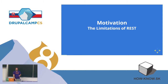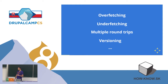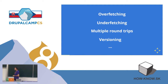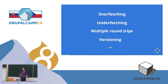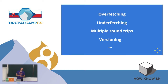REST has some fundamental flaws when it comes to solving these problems. We have the problem of overfetching, underfetching, the problem of additional round trips — especially because we don't have HTTP/2 yet widely available — and we have the problem of versioning.